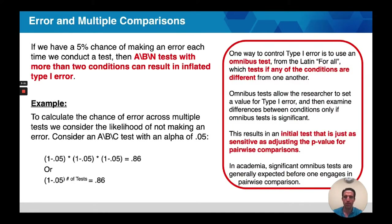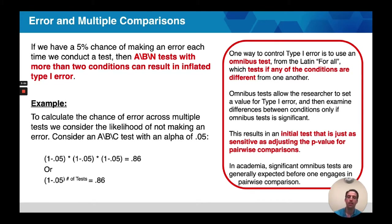How does this relate to multiple comparisons? If we have a 5% chance of making an error each time we conduct a test, then ABN tests with more than two conditions can result in inflation of type 1 error. To calculate the chance of error across multiple tests, we consider the likelihood of not making an error. For an ABC test with three conditions and alpha of 0.05, it's 0.95 times 0.95 times 0.95, which gives us 0.86 — meaning we now have a 14% chance of making an error because we've conducted three different comparisons.